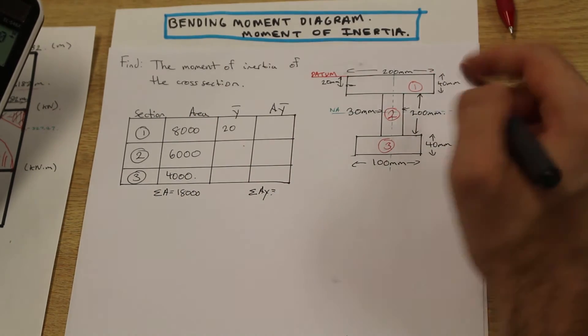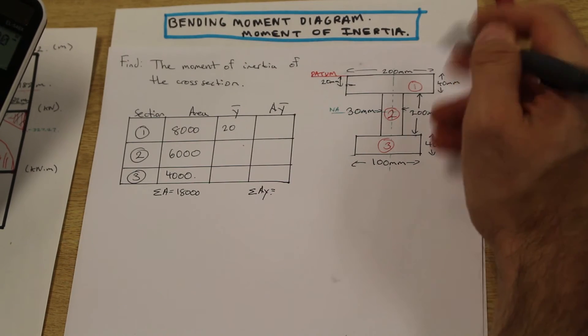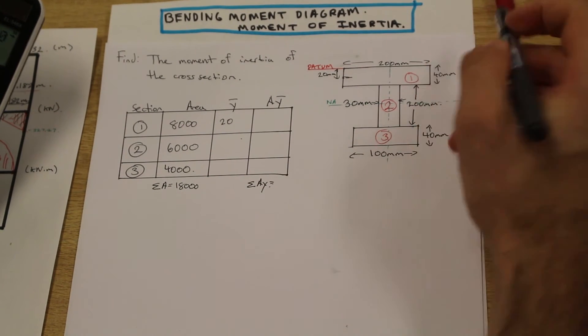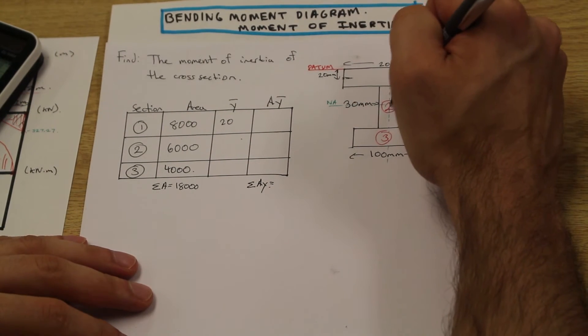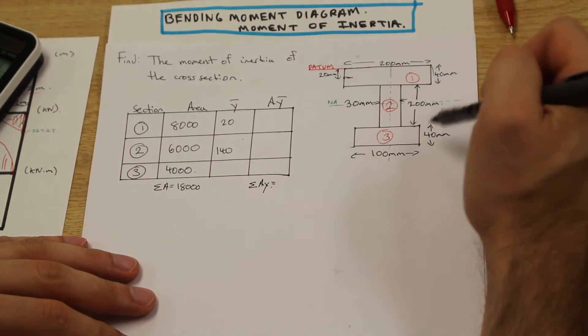For section 2, what's the centroid of a 200 millimeter tall rectangle? Same as this hundred, just take half, but we also need to add 40 here because we need to measure from the datum to the centroid of this shape. So we're going to take 40 plus 100, we have 140.